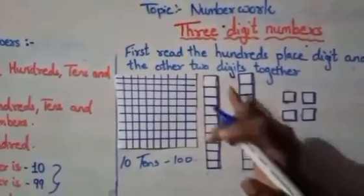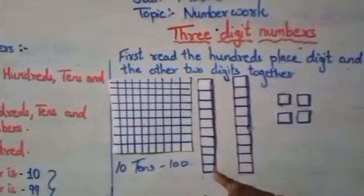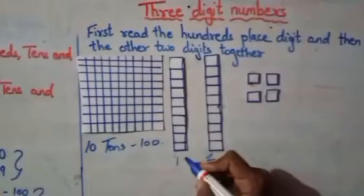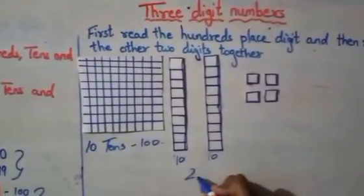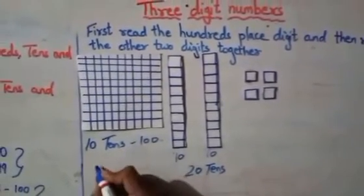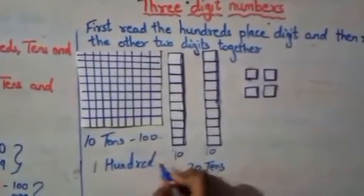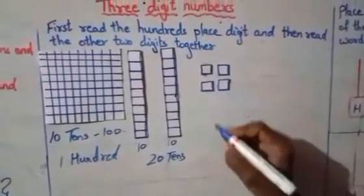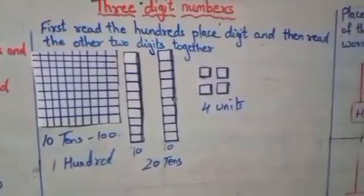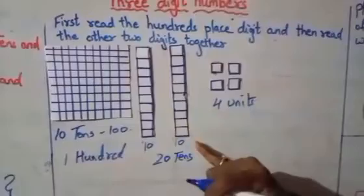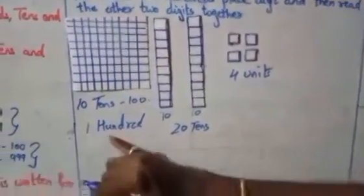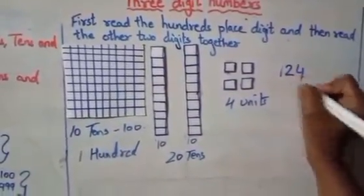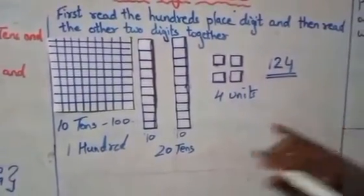Now I have split that into parts. Here is one strip of 10, and here is a second strip of 10. So 10 and 10 makes 20 — that is 2 tens. And here is 1 hundred. And the single unit numbers — there are 4 units. So we have 1 hundred, 2 tens, and 4 units, giving us 100 and 20 and 4.